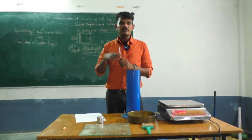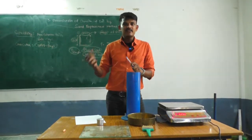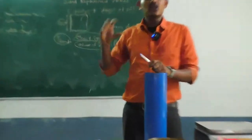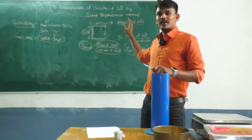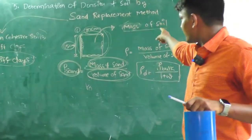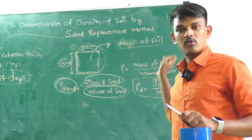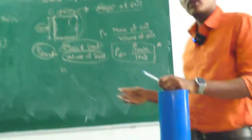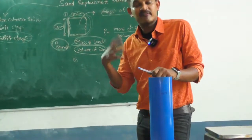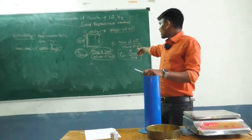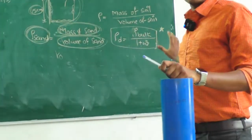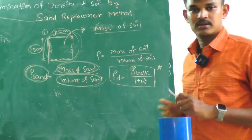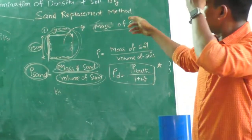Knowing the weight of sand in the hole and the density of the sand, we can calculate the volume of sand, which equals the volume occupied by the original soil in that hole. With the mass of soil and the calculated volume, we get bulk density. Using the oven-drying method to determine water content and applying the formula γd = γ_bulk / (1 + water content), we calculate the dry density of the soil.